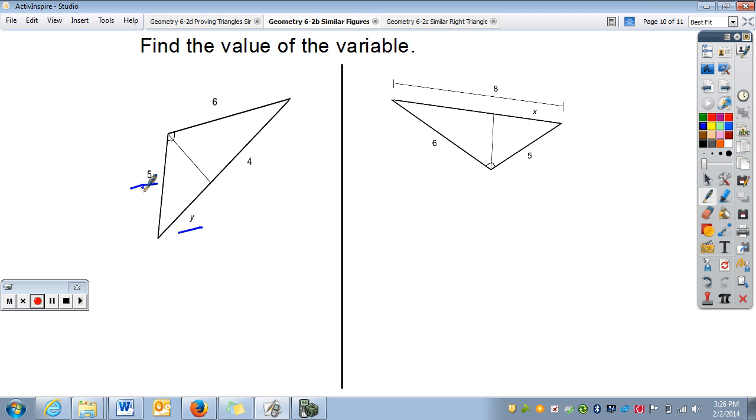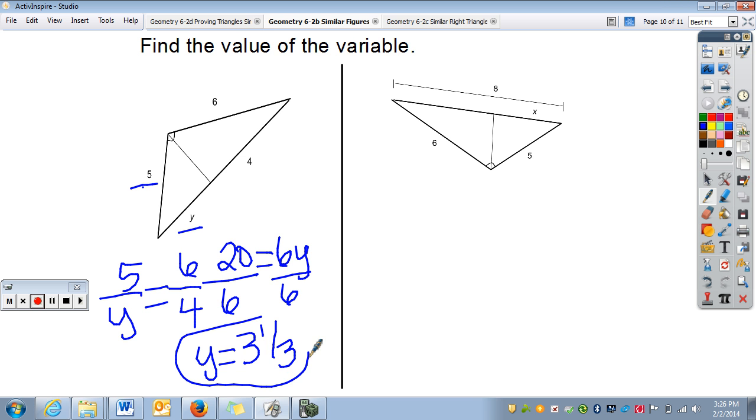Here we have 5 and Y. 5 and Y go together. Or, I can go 5 and 6. I'm going to go 5 over Y. More than one way to set a proportion. 6 over 4. Gives me 20. When you cross multiply, 6Y. Divide by 6. Y equals 3 and a third, or 3.3 repeating.